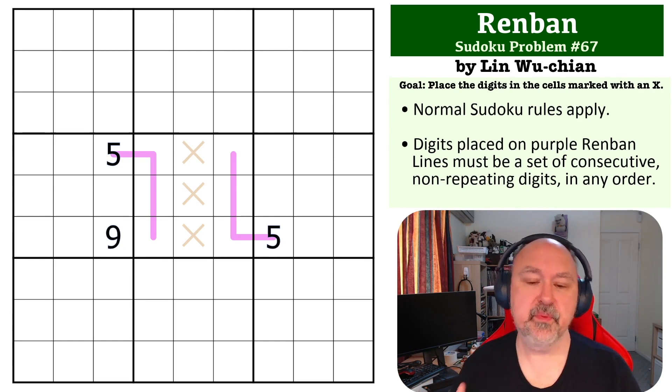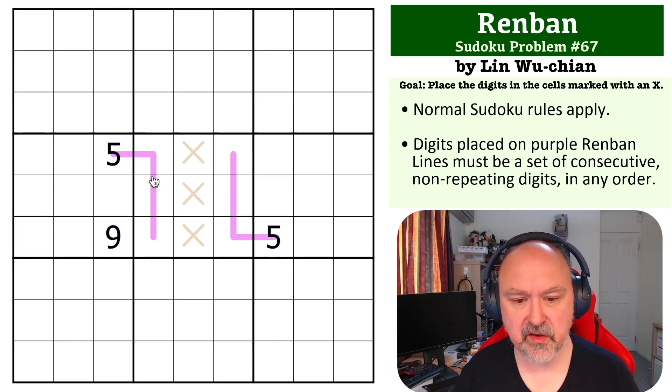Okay, so because you can't repeat a digit on a Renban line, the big question you want to ask is where does 5 go in box 5? Because you can't put 5 in either of these rows and you can't repeat them on the Renban lines, 5 has to go into the center of the grid. Now...